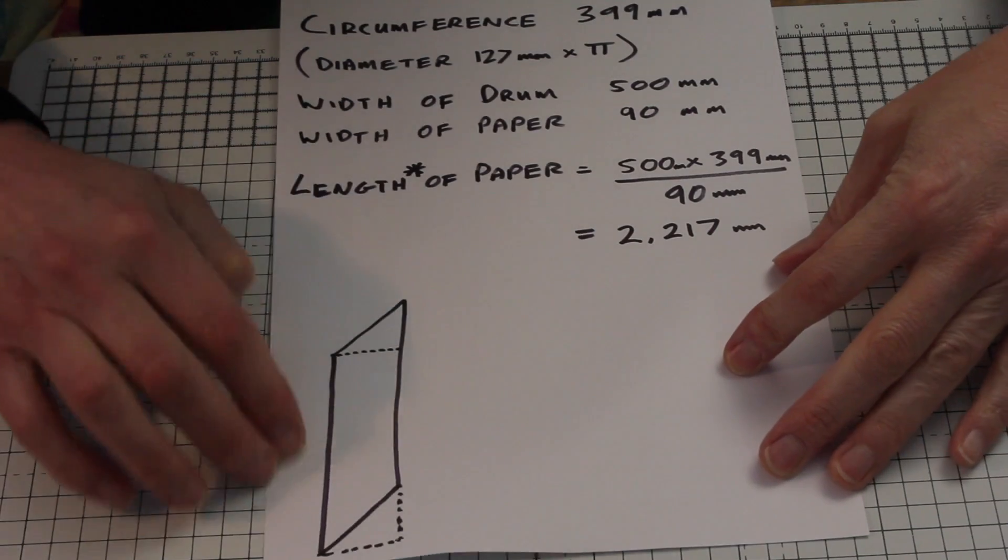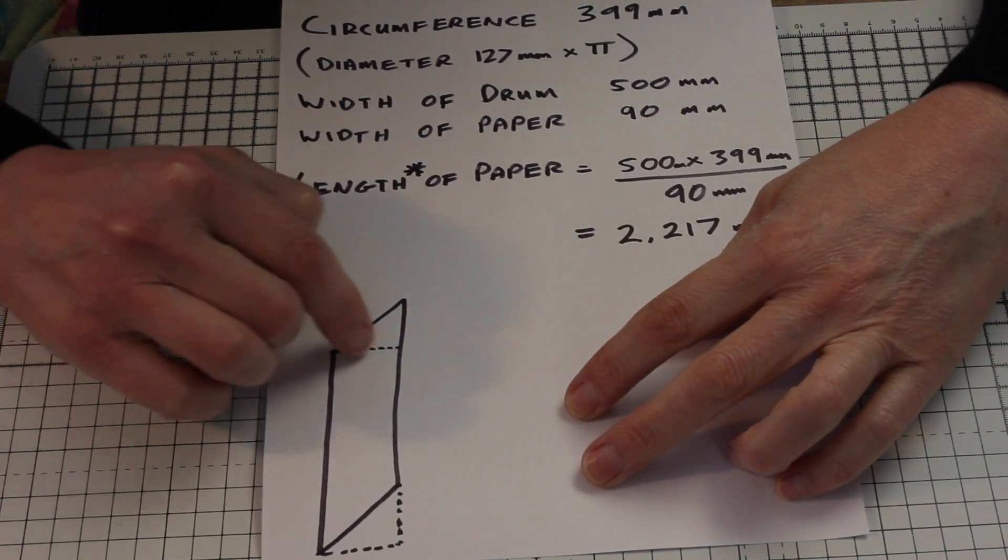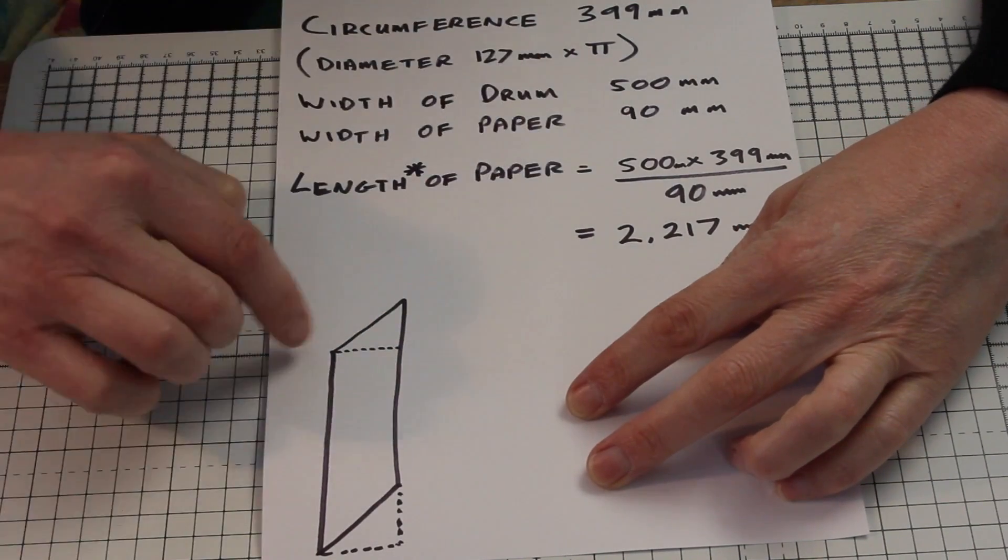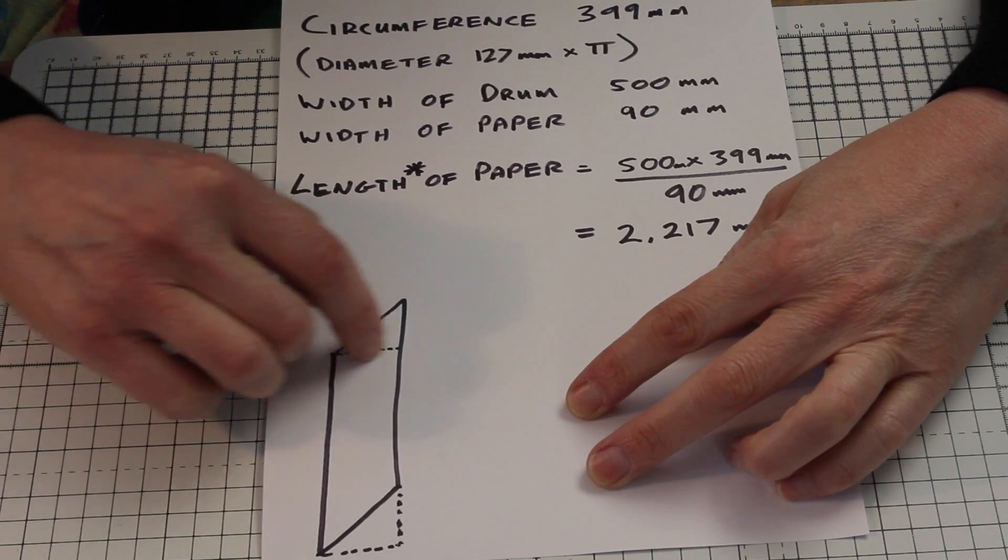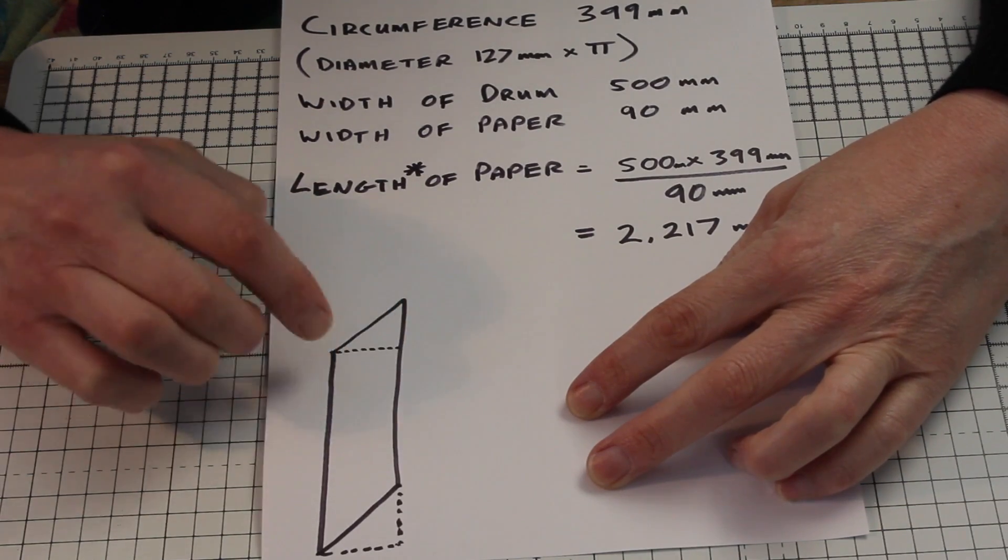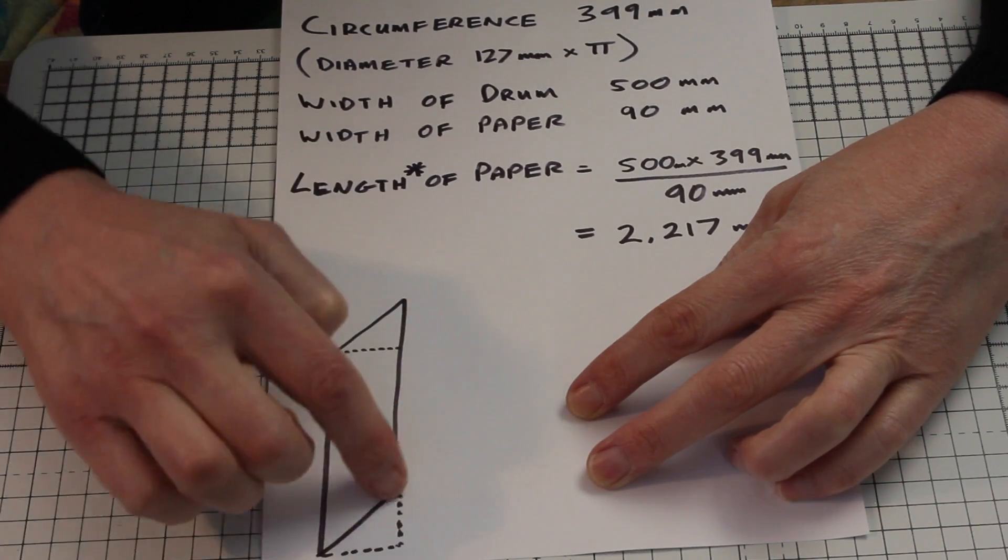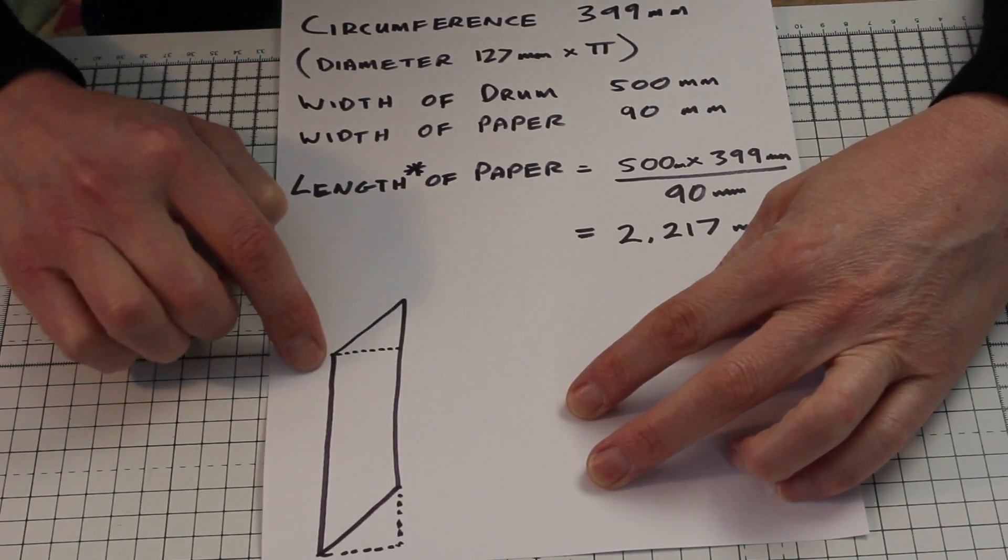So let's just consider this a minute. The dotted rectangle here is of length 2,217 along there by 90 wide. And that total area is the area we want. But if you think about it, that is exactly the same area as the tapered parallelogram we have.